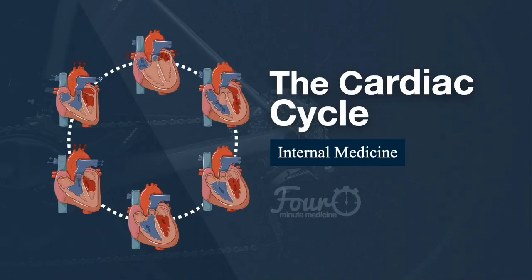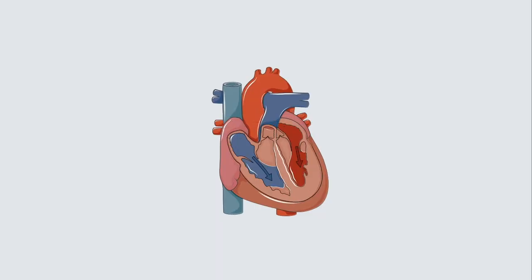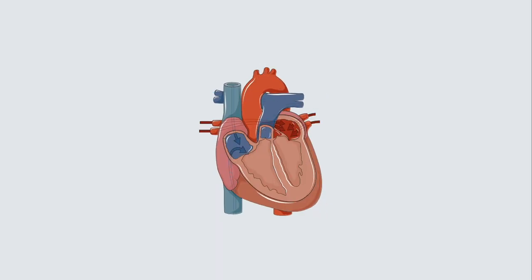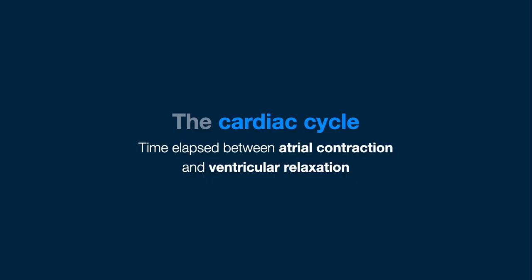In this video, we will review the cardiac cycle, which represents a continuous and repetitive series of cardiac events. It specifically represents the time elapsed between atrial contraction and ventricular relaxation.